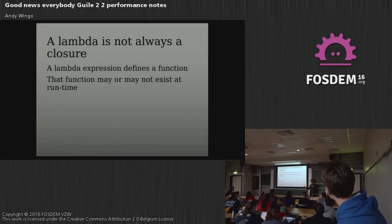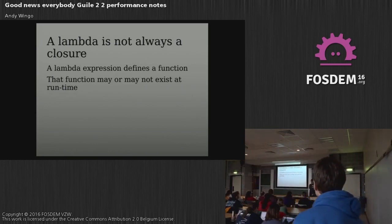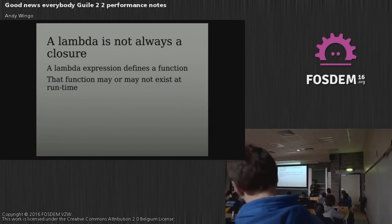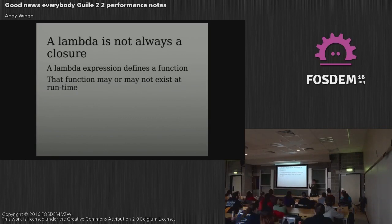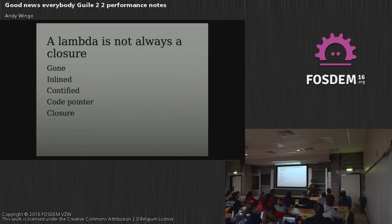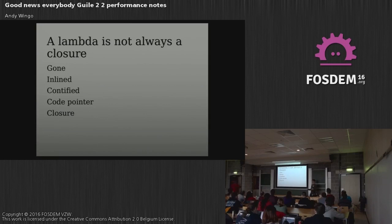Lambda — that's our tribe, the thing some of us have tattooed on our arms. Sometimes we think of lambda expressions as simply defining functions, but that function doesn't necessarily exist at runtime. We need to look at how a lambda can be represented at runtime. Is it always a closure? Does it have a cost at all, and if so, what kind? A lambda can be completely gone, completely inlined, contified, represented as a code pointer, or it can be a closure. A closure is just one of five things a lambda can be.